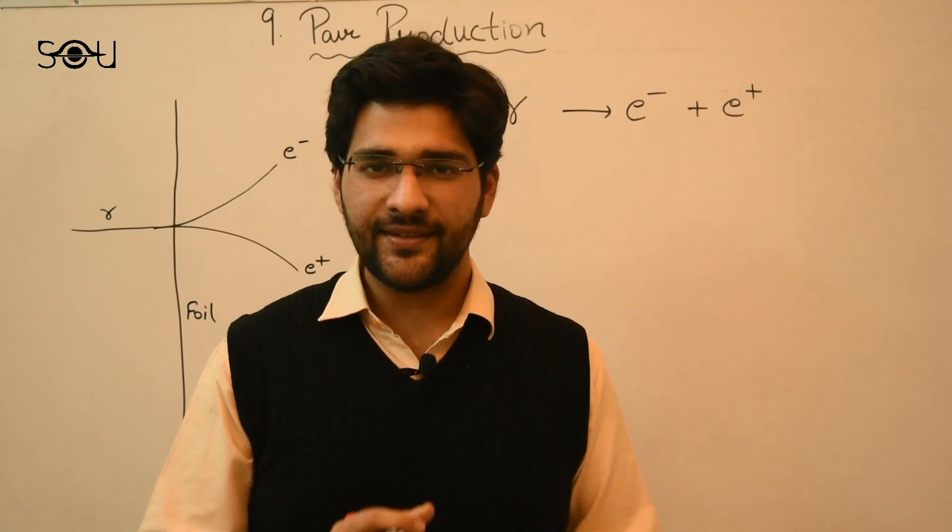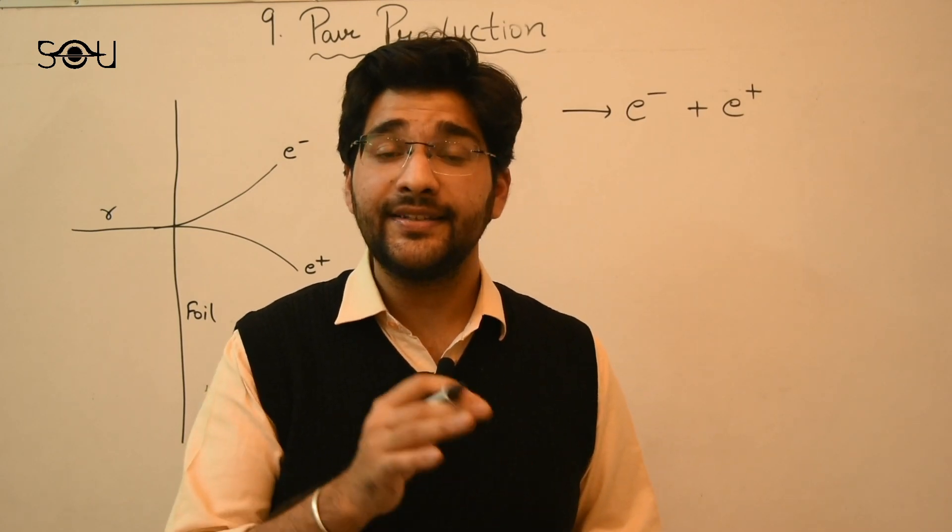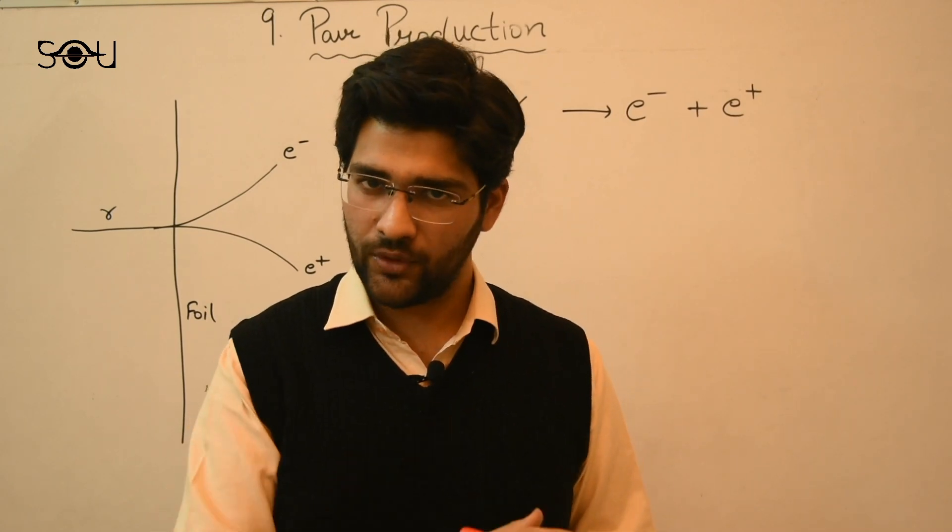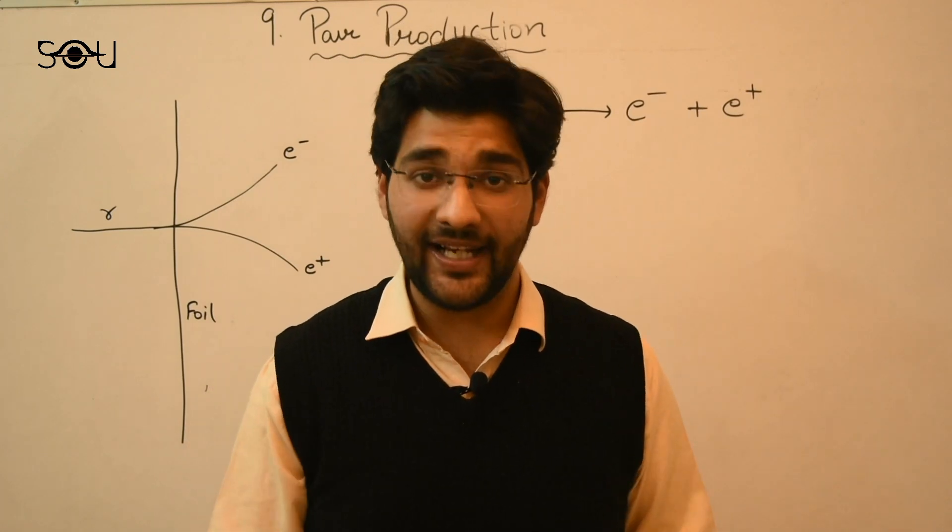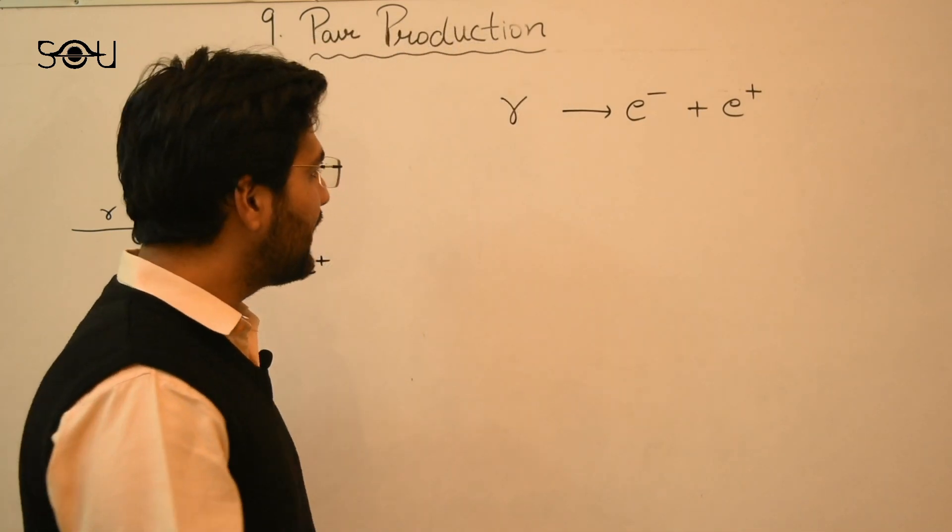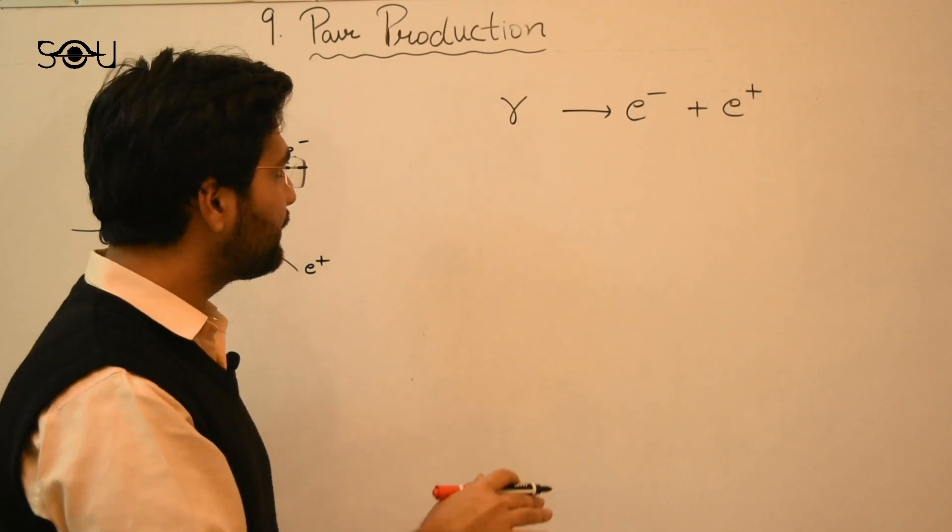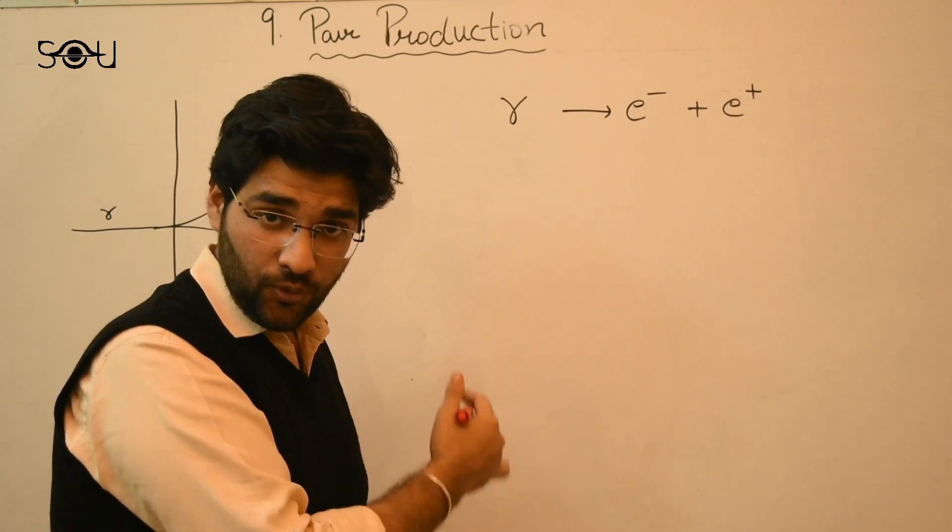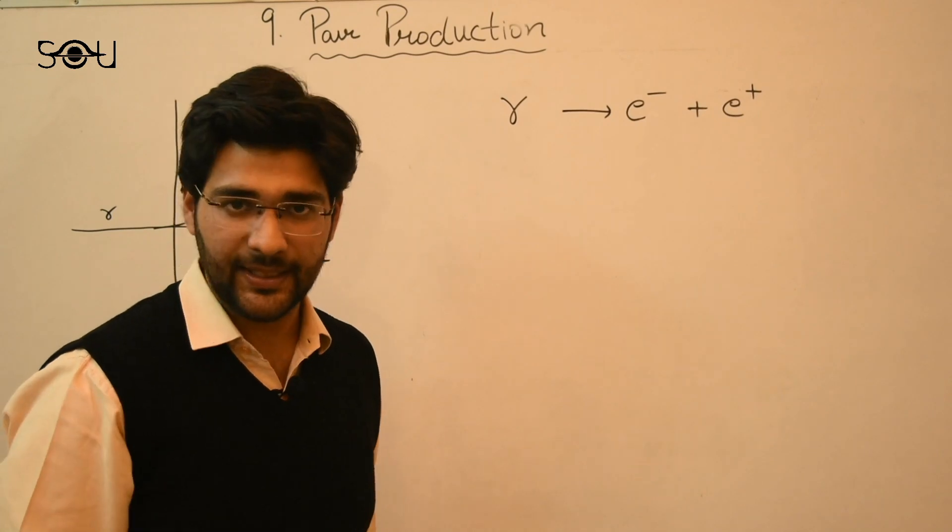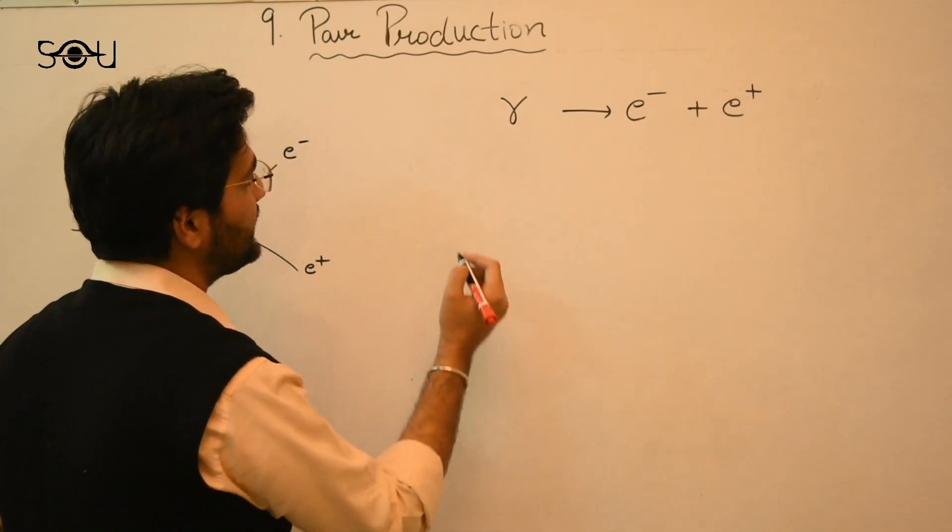In particle physics, there are some physical quantities that must be conserved before and after the reaction. One of them is electric charge. So let's see how electric charge is conserved. Electric charge before and after the interaction must be the same. That is, consider the left hand side.